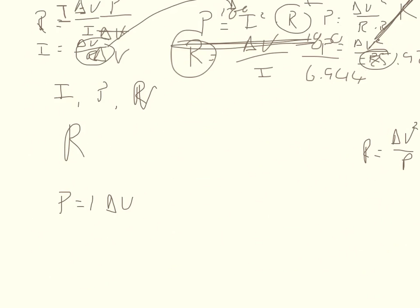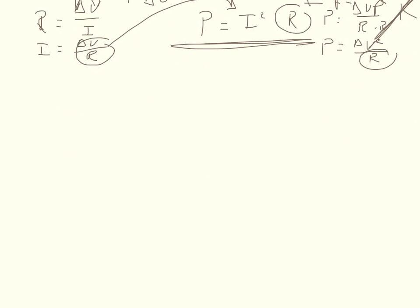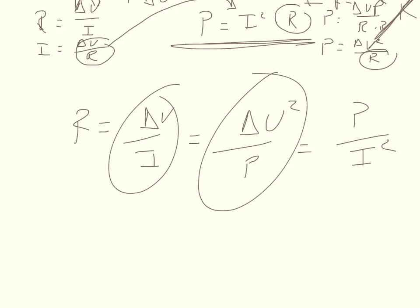So in summary, I'll move all this stuff out of the way. We can say that R equals delta V over I, which equals delta V squared over P, which equals P over I squared. So any one of these formulas will independently solve for R.